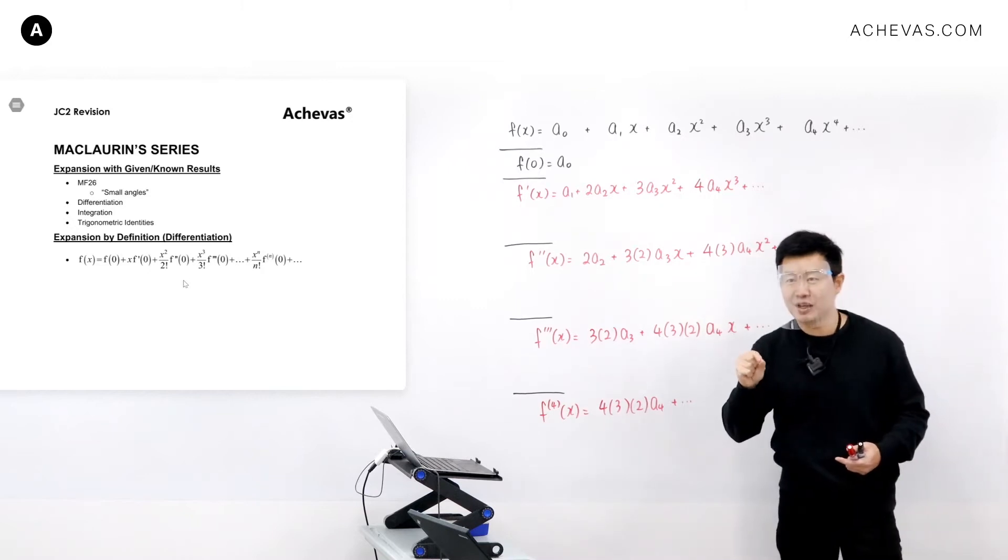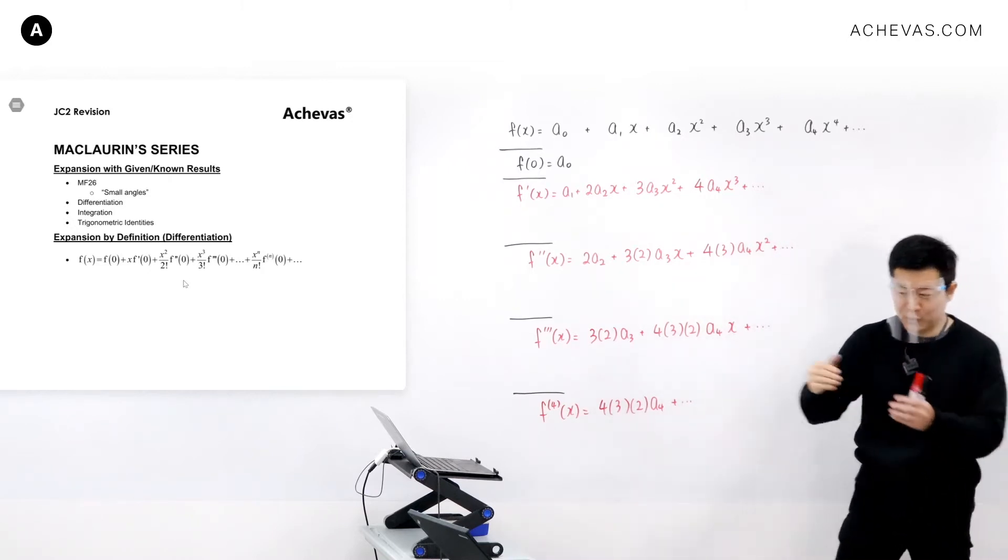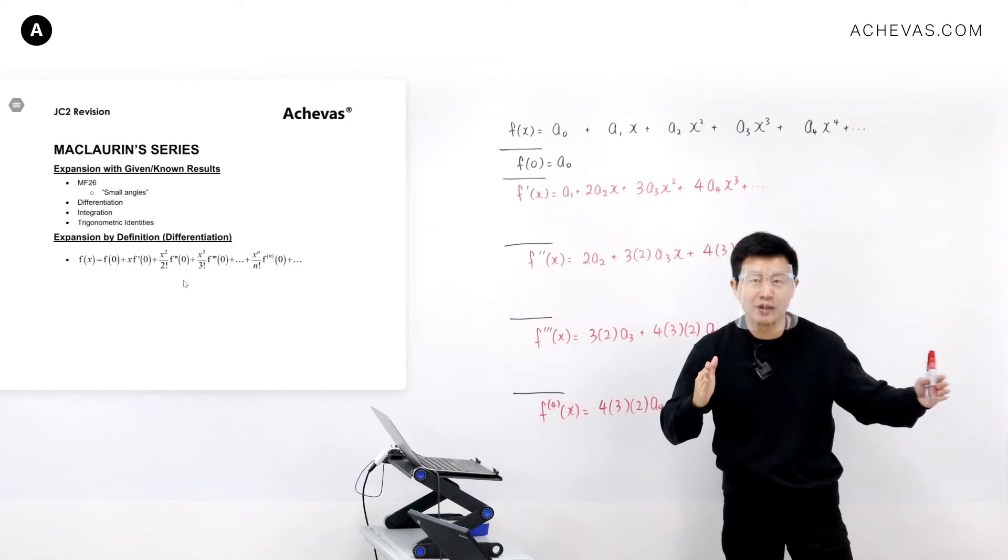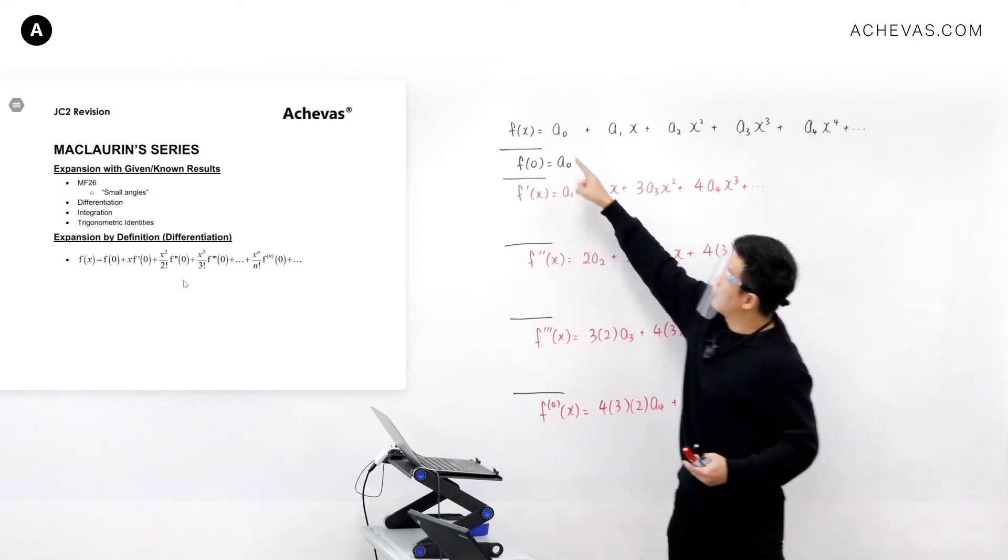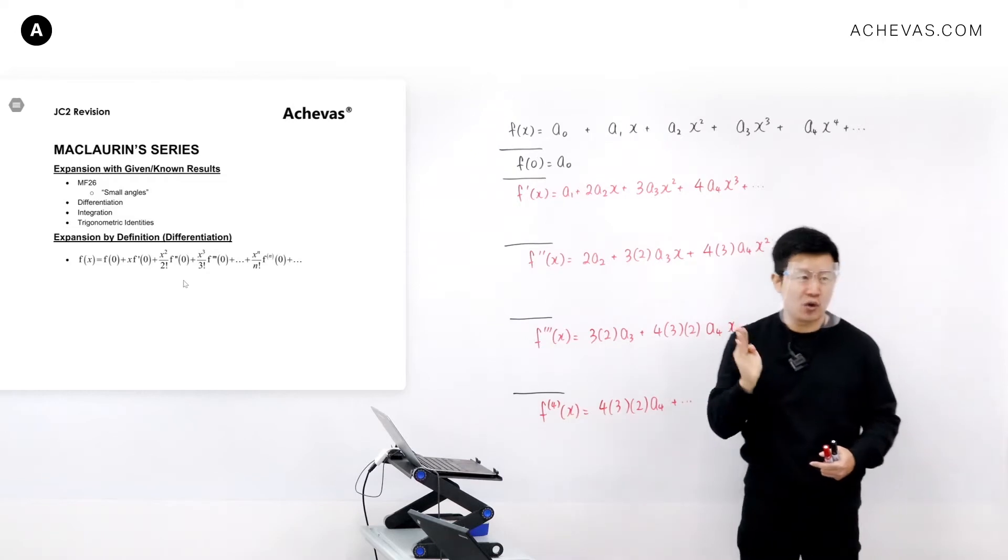It is an infinite polynomial, which means that our aim, if I want to re-express a function into an infinite polynomial, will be to solve for a0, a1, a2, a3, a4, all the way.